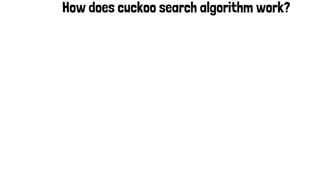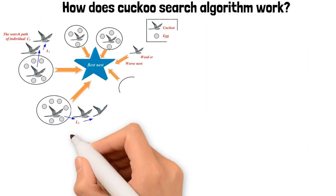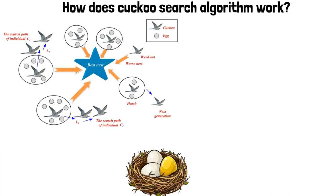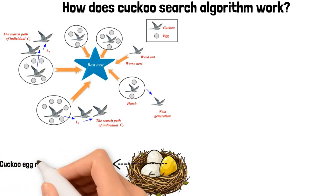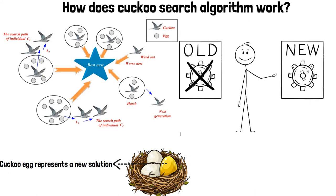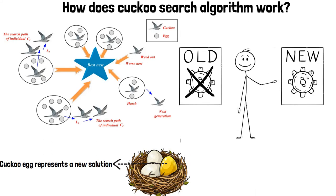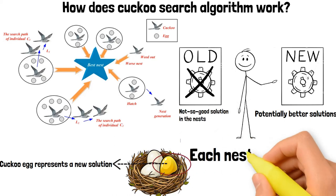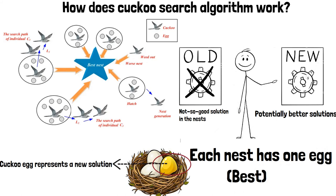How does the cuckoo search algorithm work? Each egg in a nest represents a solution, and a cuckoo egg represents a new solution. The aim is to use the new and potentially better solutions — the cuckoos — to replace a not-so-good solution in the nests. In the simplest form, each nest has one egg.